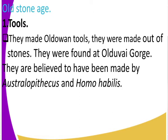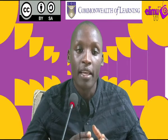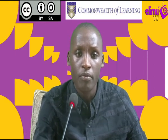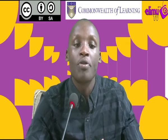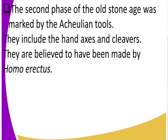In the cultural and economic practices of early man, we look at the tools he made, the shelter, and the food. In the Old Stone Age, they made tools known as Oldowan tools, made out of stones. These tools were found in Olduvai Gorge and are believed to have been used by Australopithecus and Homo habilis. In the second phase of the Old Stone Age, tools were more advanced, marked by the Acheulean tools — sharp stone tools including hand axes and cleavers — believed to have been made by Homo erectus. The Acheulean tools were more advanced than the Oldowan tools.